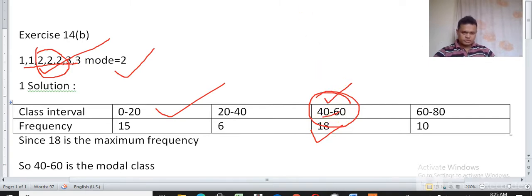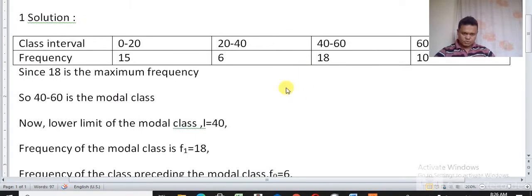Now for this modal class 40 to 60 we need the lower limit. Lower limit of this modal class is 40. Then this frequency also we need - this is the main part of the problem. This one we write f1, the frequency of the modal class. Then we need frequency of the class just before the modal class, that is 20 to 40, and its frequency is 6, so we write this one as f0.